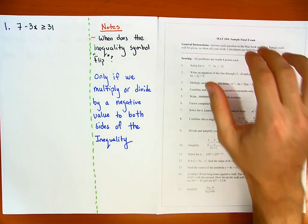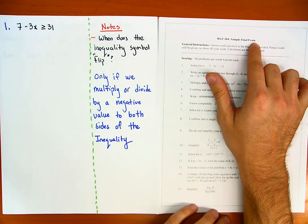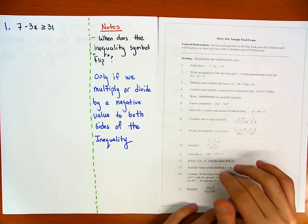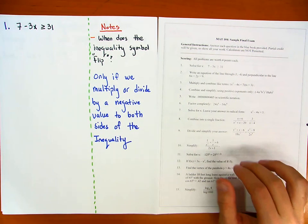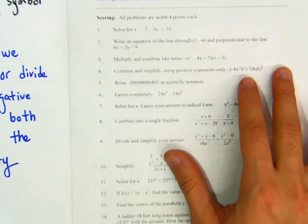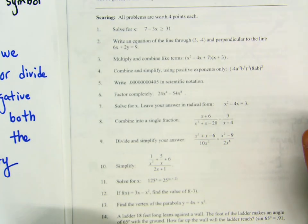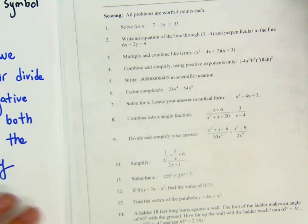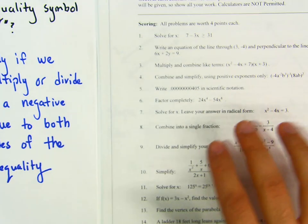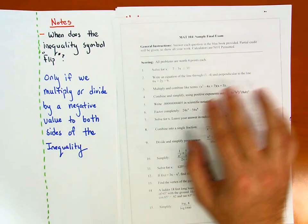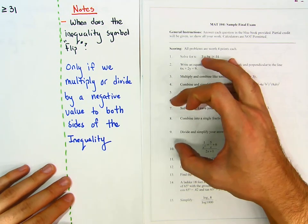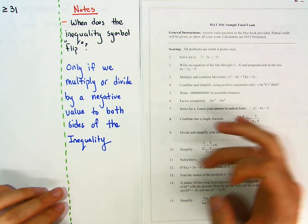Welcome everybody. This is the sample final exam for Lehman College, Math 104. Here are the 15 questions from the review sheet — questions 1 through 15. I'll make three parts: the first part will cover questions 1 to 5, the second part questions 6 to 10, and the third and final part questions 11 to 15.